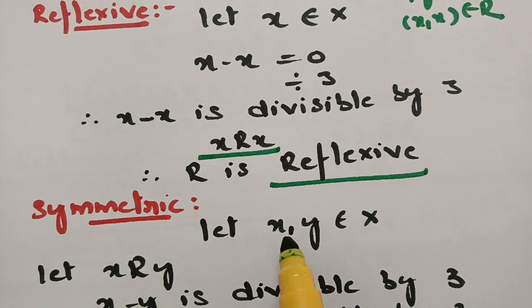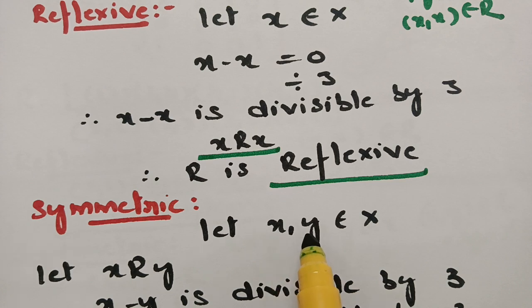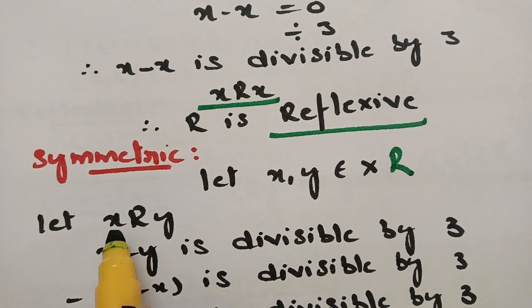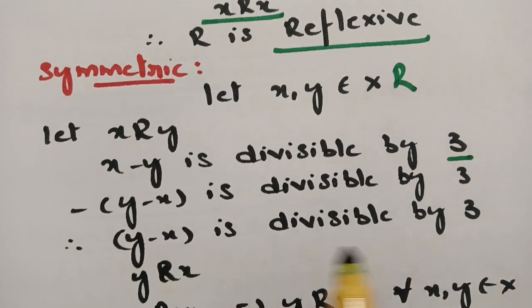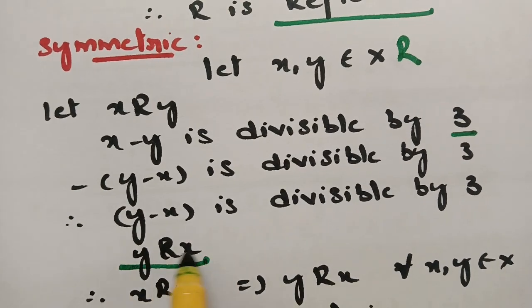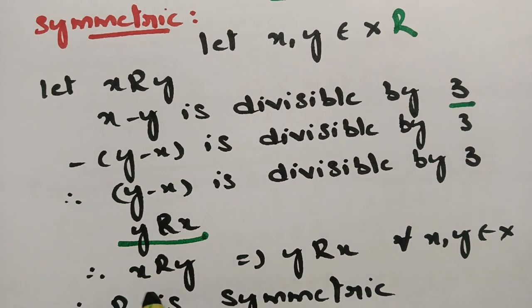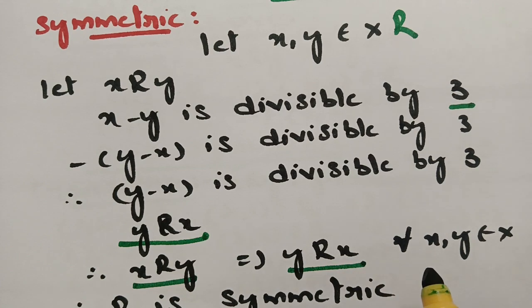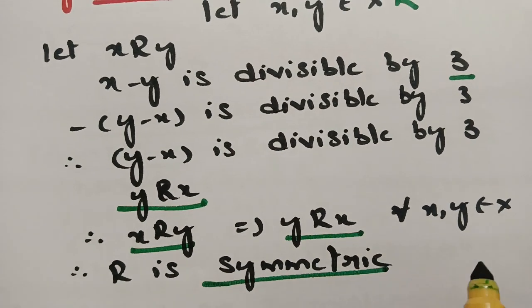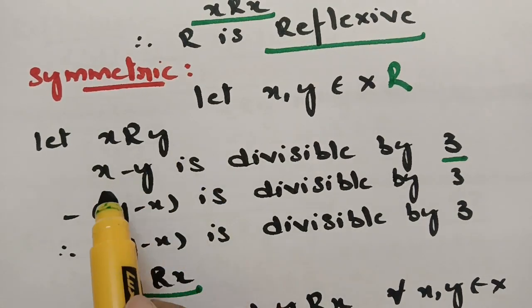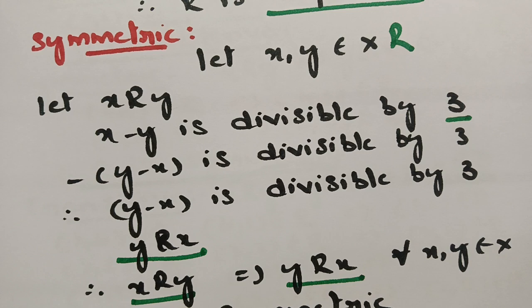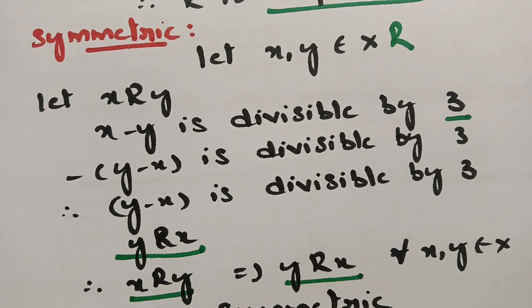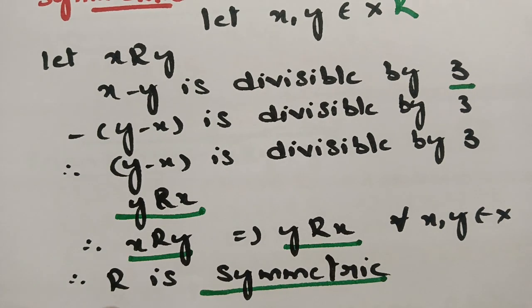For symmetric: take (x, y) belonging to R. Therefore x minus y is divisible by 3. Taking minus as common, y minus x is also divisible by 3. Clearly, if y minus x is divisible by 3, then y is in relation with x. I have taken x is related to y, and shown that y is related to x. Therefore R is a symmetric relation.